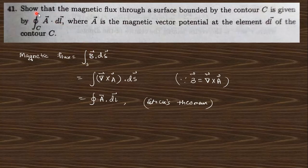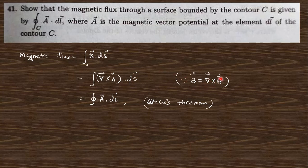Question 41: Show that the magnetic flux through the surface bounded by contour C is given by the cyclic integration of A·dl, where A is the magnetic vector potential at element dl of contour C. Magnetic flux is B·dS; we put B = curl of A, and from Stokes' theorem we rewrite this as the cyclic integration of A·dl. So the total magnetic flux is obtained in this way.